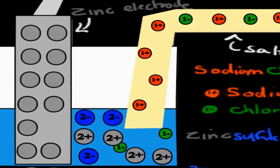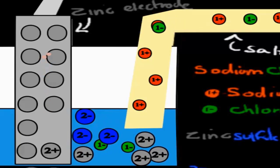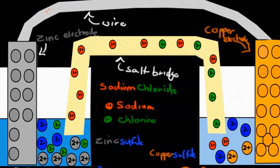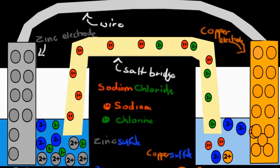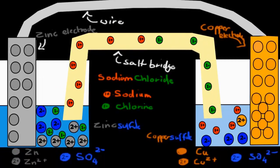Watching it at full speed: electrons leave, zinc drops in as 2+, minuses come in to equal the charge. Electrons move to the other side, attract copper from the solution — the copper ion loses its 2+ charge and becomes elemental copper. Sodium ions move in to rebalance, and now everything is equal again. That's the whole idea of a galvanic cell.